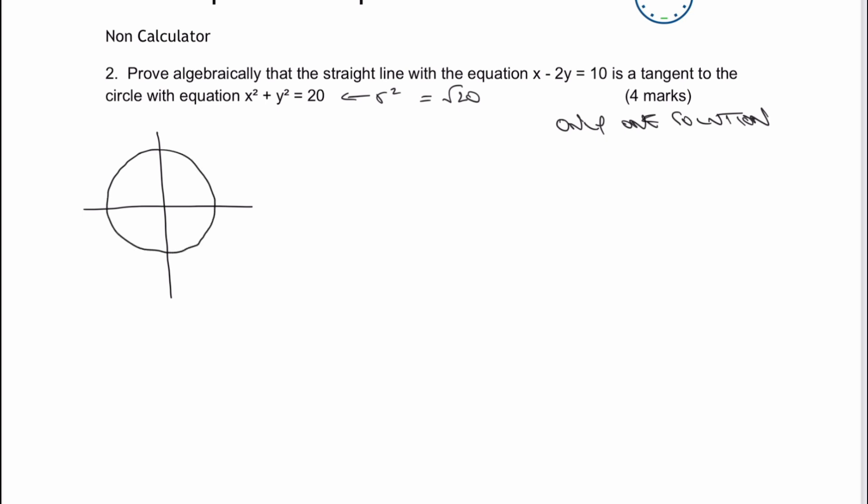So therefore, I've got a radius of a circle. Very roughly, it's going to be negative 4.5 there and positive 4.5 there. And that's perfectly fine just for the sake of a sketch. Let's have a look now at the straight line.